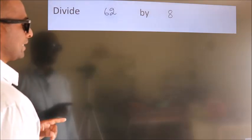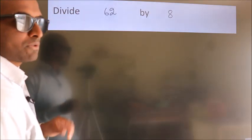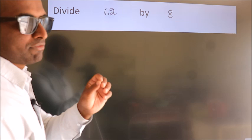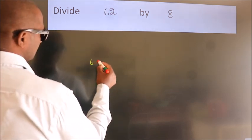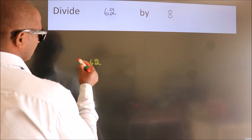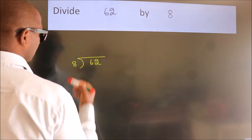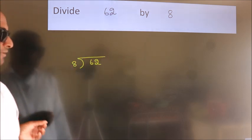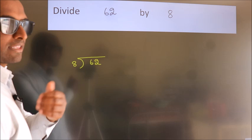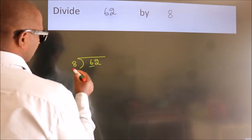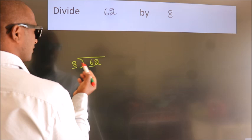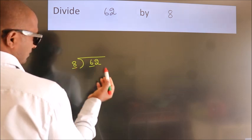Divide 62 by 8. To do this division, we should frame it in this way: 62 here, 8 here. This is your step 1. Next, here we have 6. 6 is smaller than 8, so we should take two numbers.